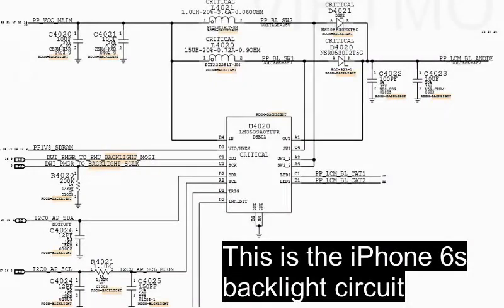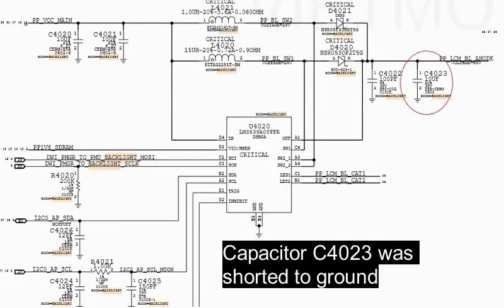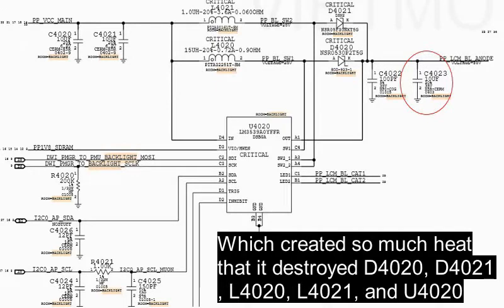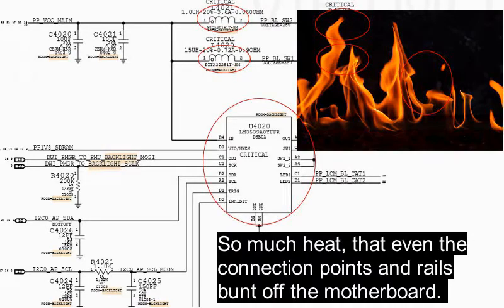This is an iPhone 6S backlight circuit. Capacitor C4023 was shorted to ground, which created so much heat that it destroyed two diodes, two coils, and the main backlight driver. So much heat was created that even the connection point of the rail burned completely off the motherboard.